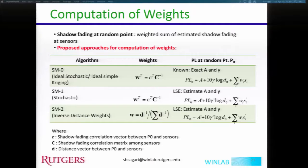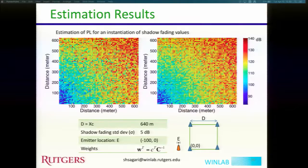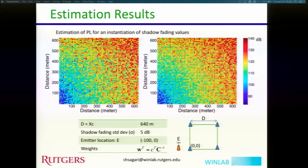Showing one particular instance of path loss estimation for one instance of shadow fading values: the left-hand side graph shows true path loss values and the right-hand side shows the estimated values. There is a good match, though we need to quantify the RMS error, which will be done in the next few slides. For this case the emitter is located outside the square at location minus 100, with 0,0 as the coordinate for one particular sensor.